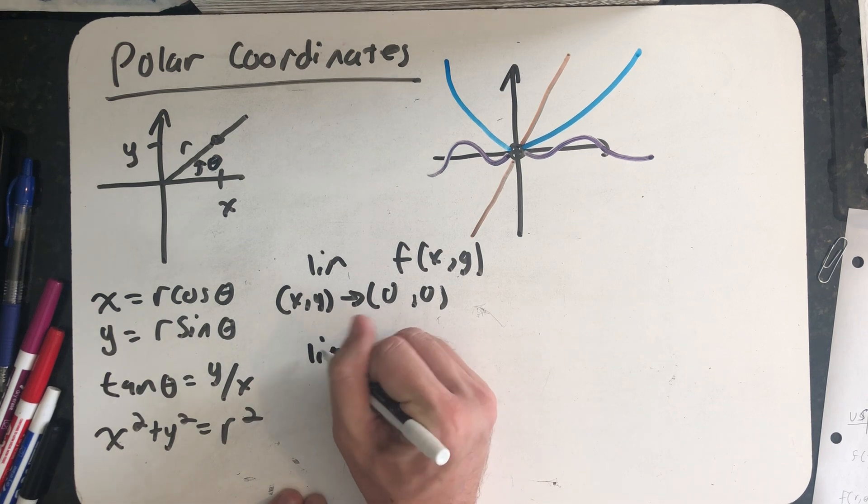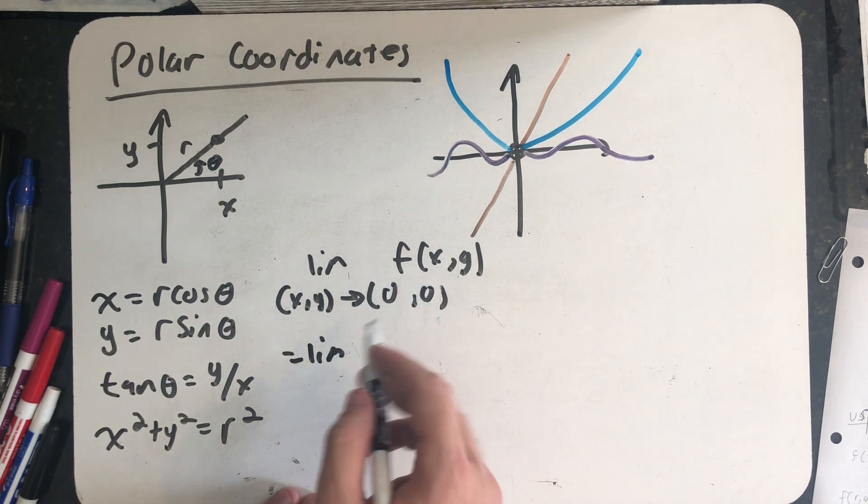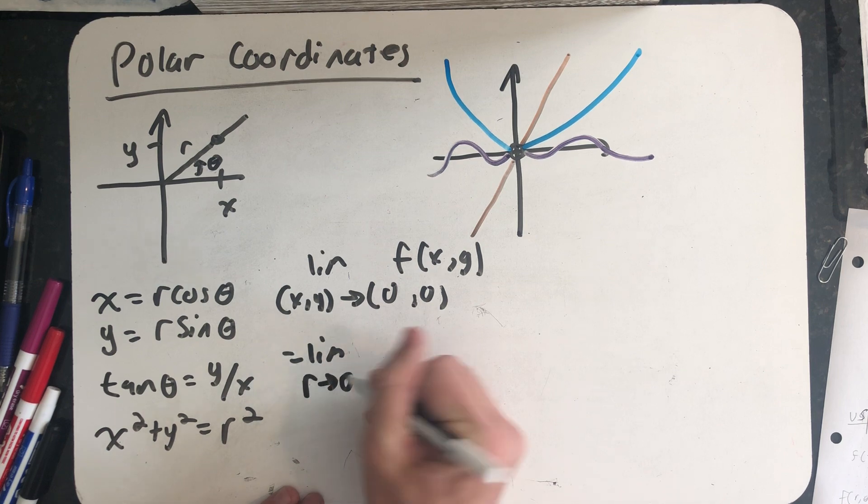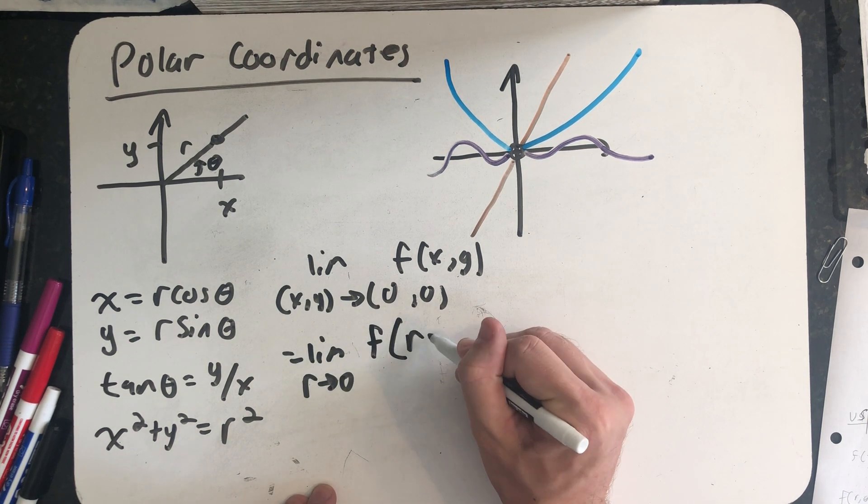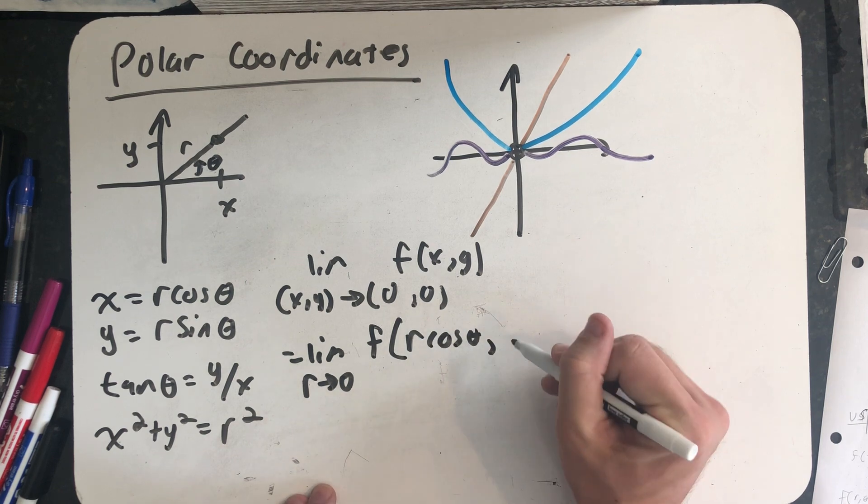And so the limit of a function on two variables as (x, y) goes to (0, 0) is always the same as the limit as r goes to zero of that same function converted to be a polar function.